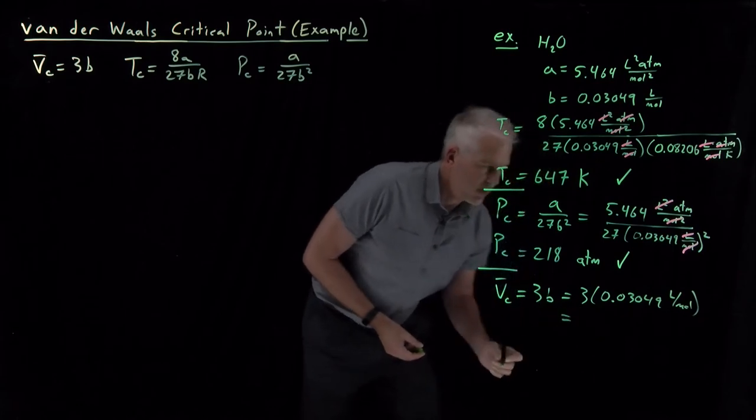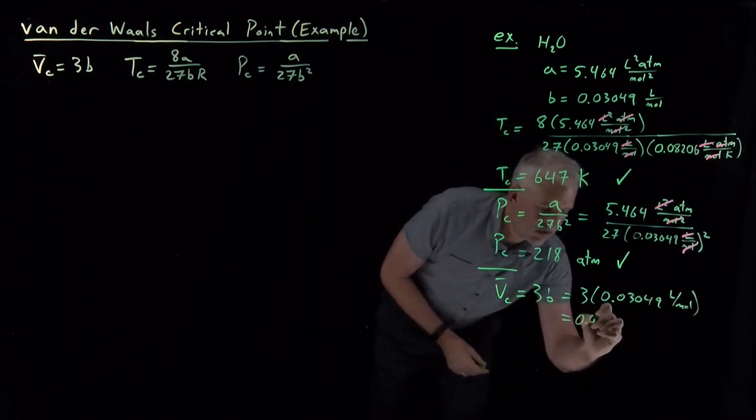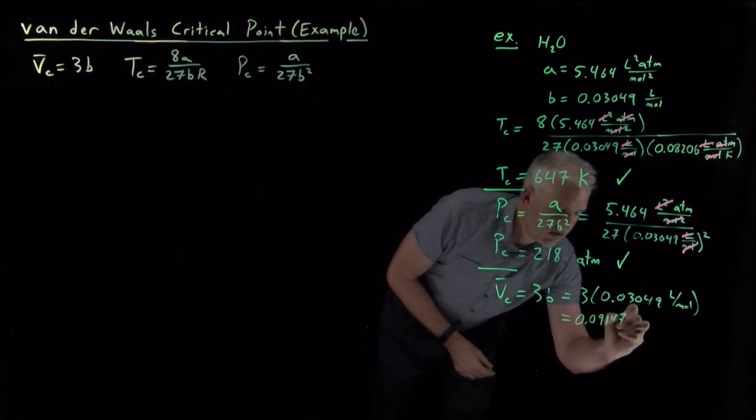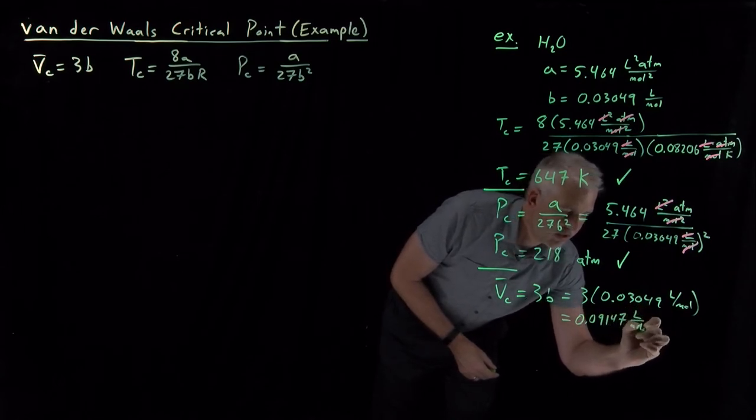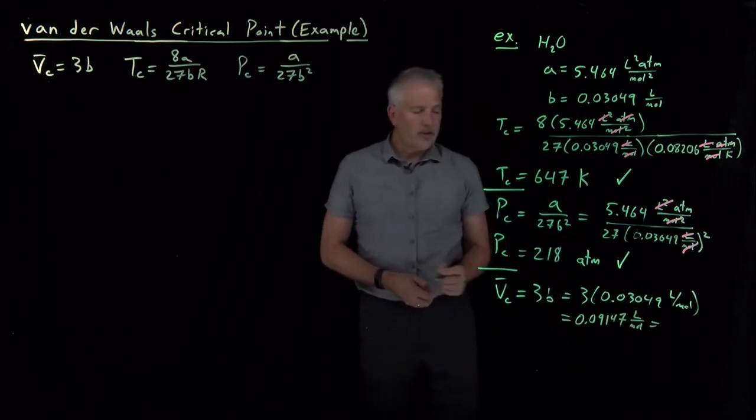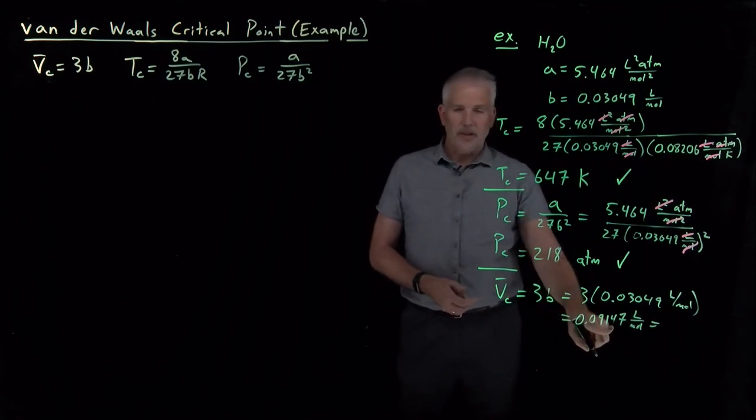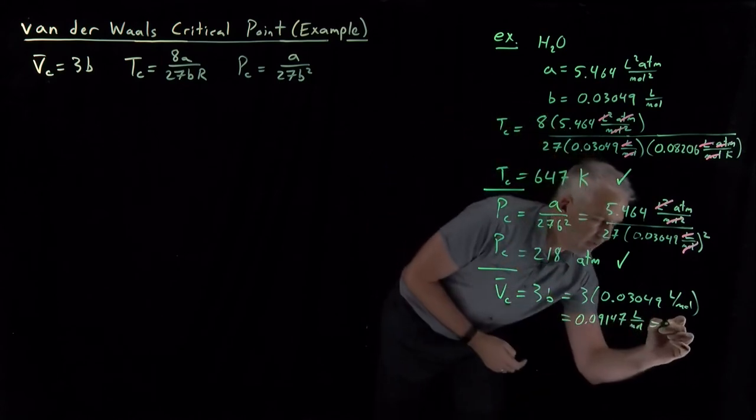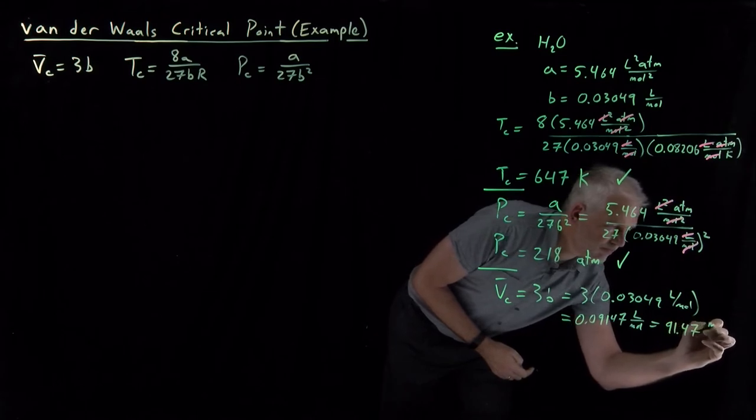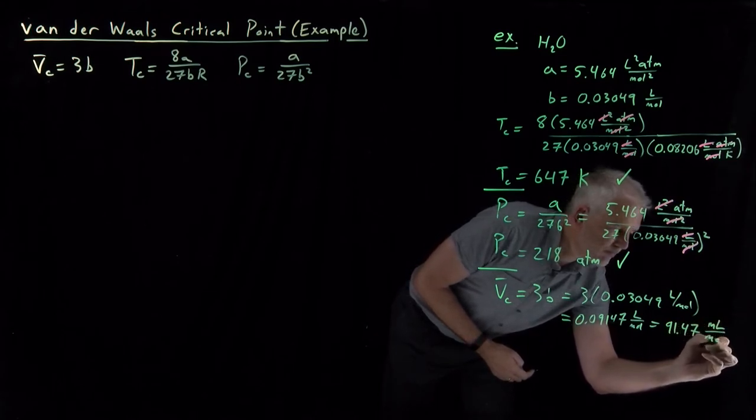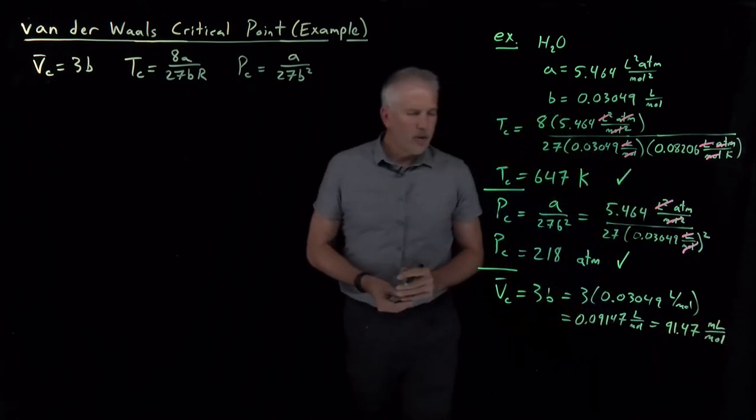So that is 0.09 in units of liters. That one is probably easier to understand if I move the decimal place over by 3 to give a value in milliliters per mole.